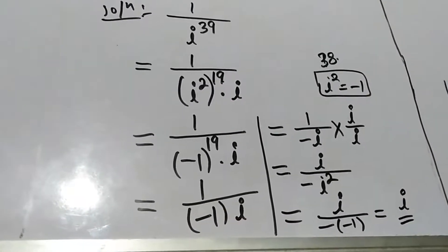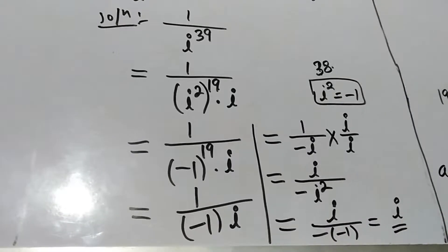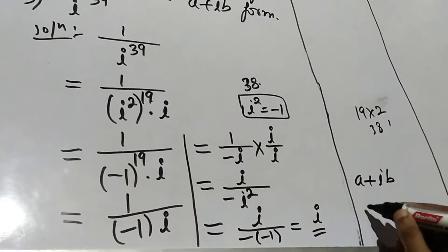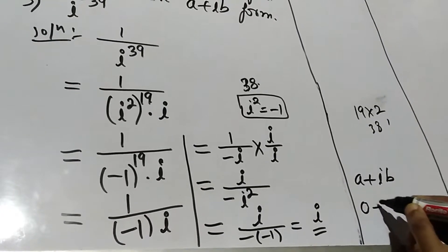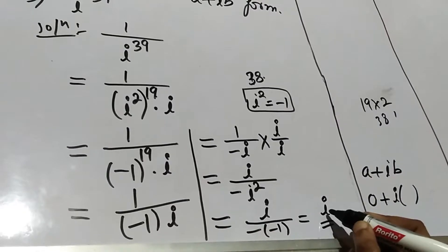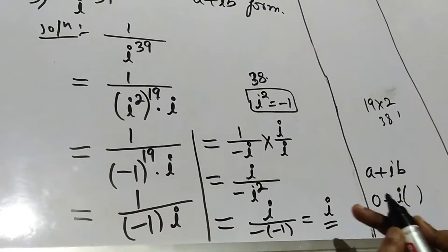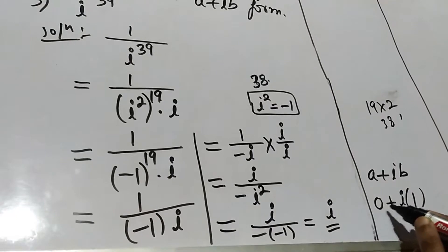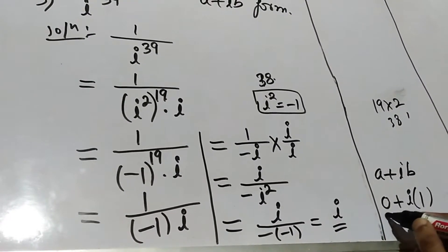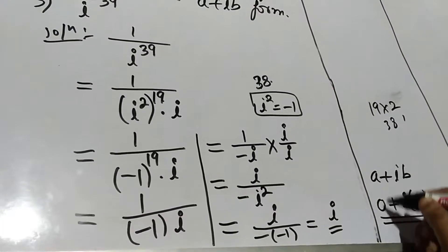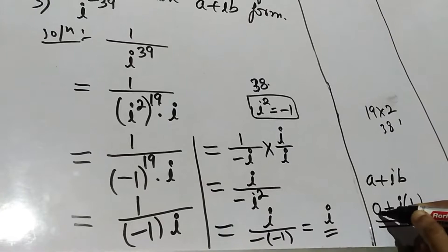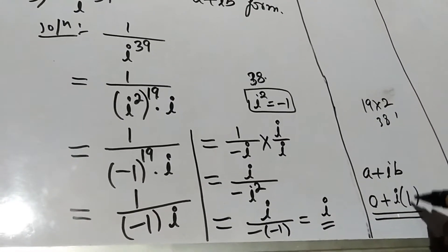Expressing in a plus ib form: there is no real part, so real part is 0. Therefore the result is 0 plus i times 1, which equals i. In a plus ib form: a equals 0 (real part) and b equals 1 (imaginary part).